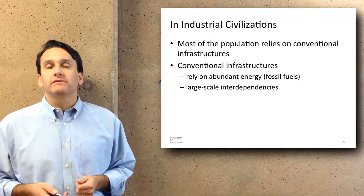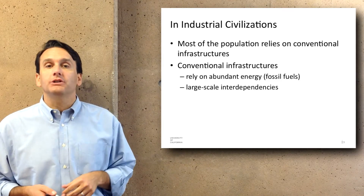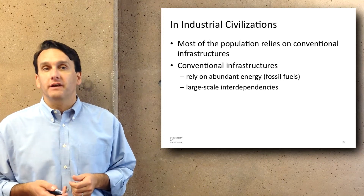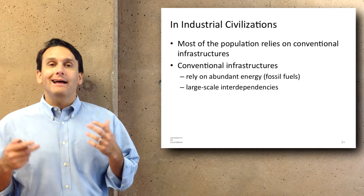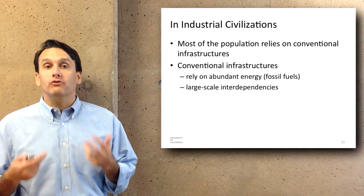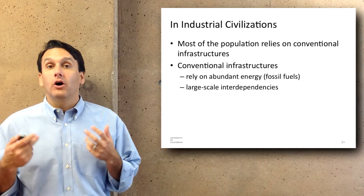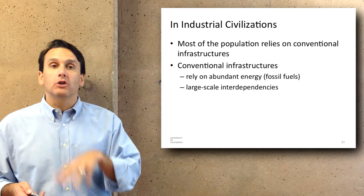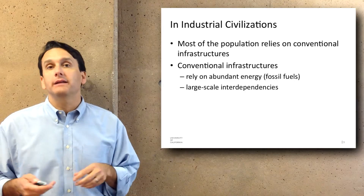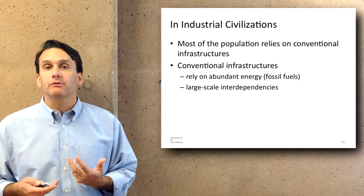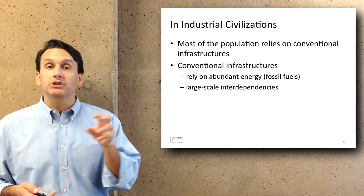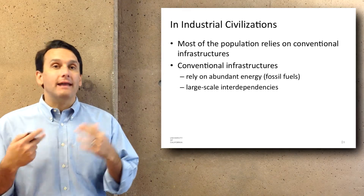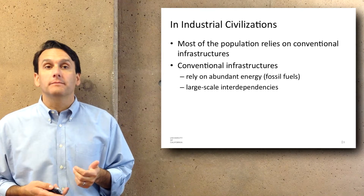In industrial civilization, most of the population is heavily reliant on a number of different conventional infrastructures. However, conventional infrastructures rely on abundant energy, primarily in the form of fossil fuels. And there are some large scale interdependencies among the different infrastructures that we rely on. I want to talk about a bunch of specific examples and also potentially the interdependencies among them.